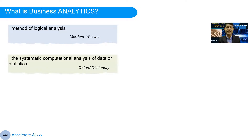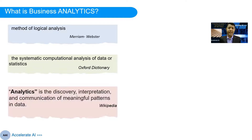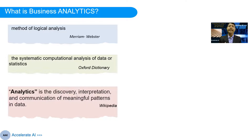Oxford dictionary takes it a little further. It says business analytics is the systematic computational analysis of data or statistics — so it specifically touches on data, statistics, and computational analysis. Wikipedia tries to elaborate and generalize the definition. It says analytics is the discovery, interpretation, and communication of meaningful patterns in the data. Data is central here, but it also emphasizes interpreting and communicating findings to your stakeholders. So that's quite good.